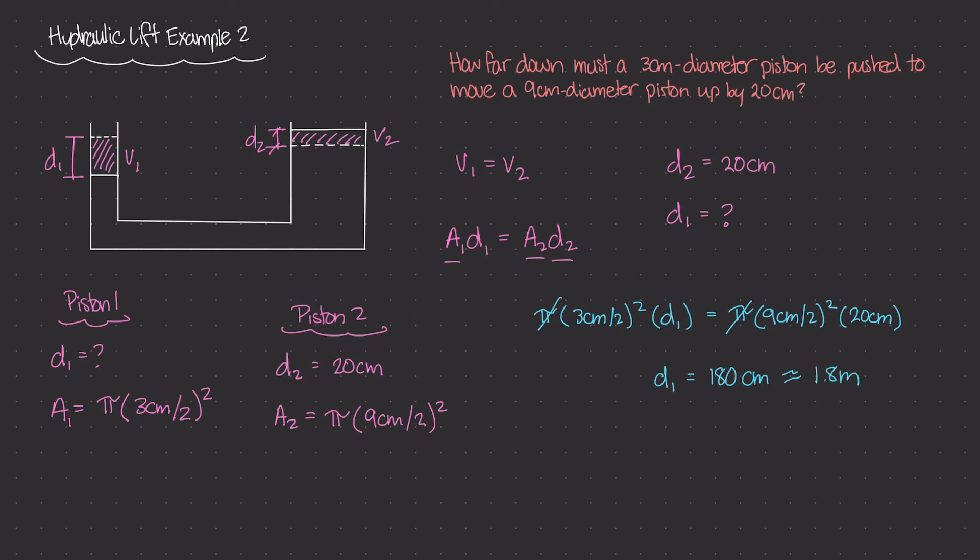So what that tells us is that we have to move piston one down by a distance of 180 cm in order to move piston two up by 20 cm. And that makes sense, right? Even though distance two is much smaller than d1, you have to remember that area two is much larger than area one. So this relationship holds up true and we get d1 equals 180 cm.